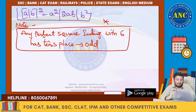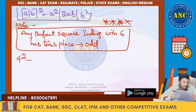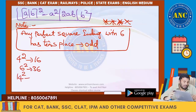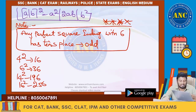Please write this down. Any perfect square ending with 6 has an odd tens place. For example: 4² = 16, 6² = 36, 14² = 196, 16² = 256. In every case, when the unit digit is 6, the tens place is odd.